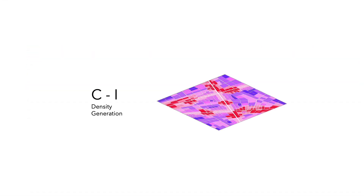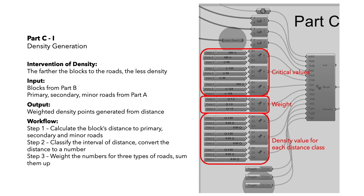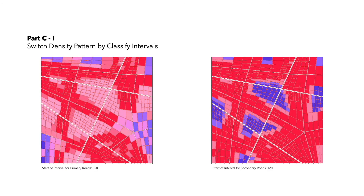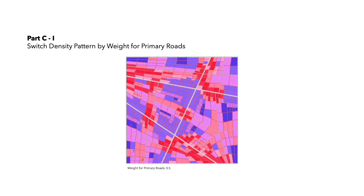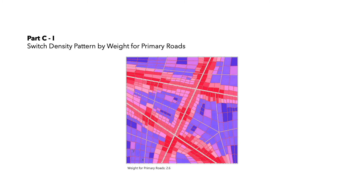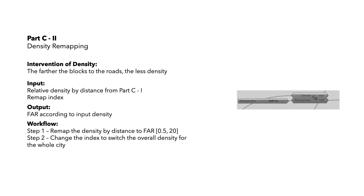This part is density calculation. The basic idea is to calculate the distance from the block to different roads, classify it by intervals, then weigh the values at the relative density. If the road interval starts larger, even blocks far from the roads will have higher density. The weight determines the influence of the roads on block density — for example, a larger weight for primary roads means blocks with highest density will all gather along the primary roads. The second step here is to remap the relative density to FAR. The remap index input allows the user to change the overall FAR for the whole city.